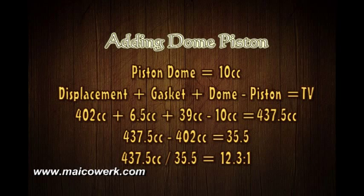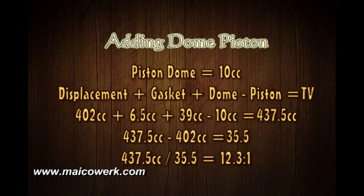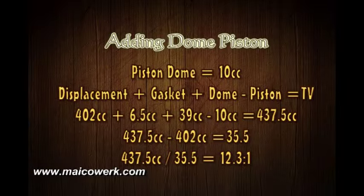Let's get a little more complicated and add a dome piston. For theory's sake, we'll say we have 10cc worth of piston dome. Now we take the displacement plus the gaskets — using the thinner gaskets — plus the dome, minus the piston's dome displacement. We get the new total volume of 437.5cc. Subtracting the engine displacement gives the smallest volume of 35.5cc. Our new compression ratio is 12.3 to 1, which is much higher than what we started with at 9 to 1.